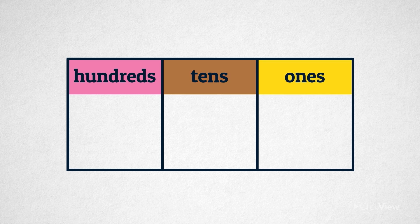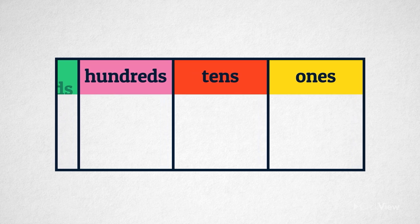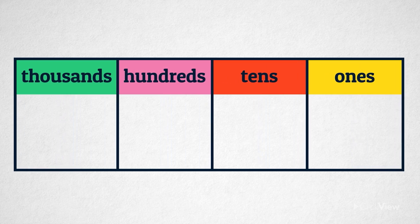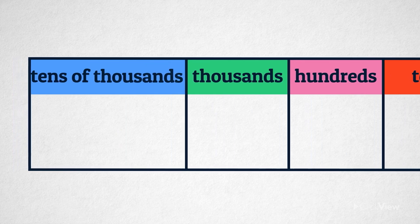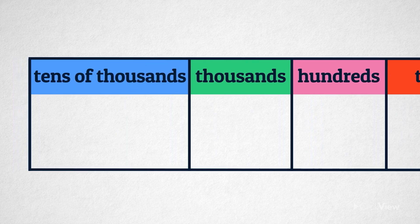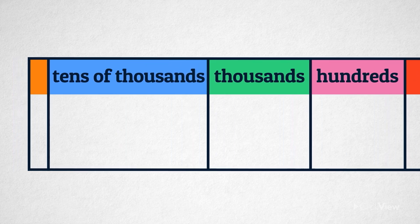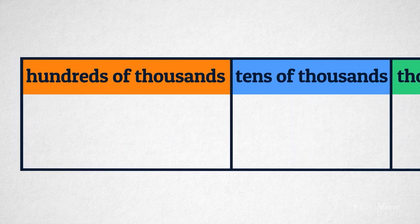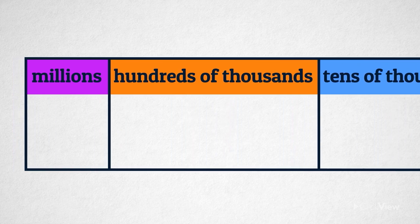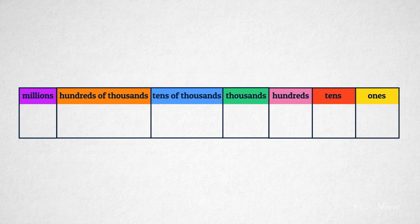Ones, tens, hundreds, thousands, tens of thousands, hundreds of thousands, millions. That's a lot of columns!